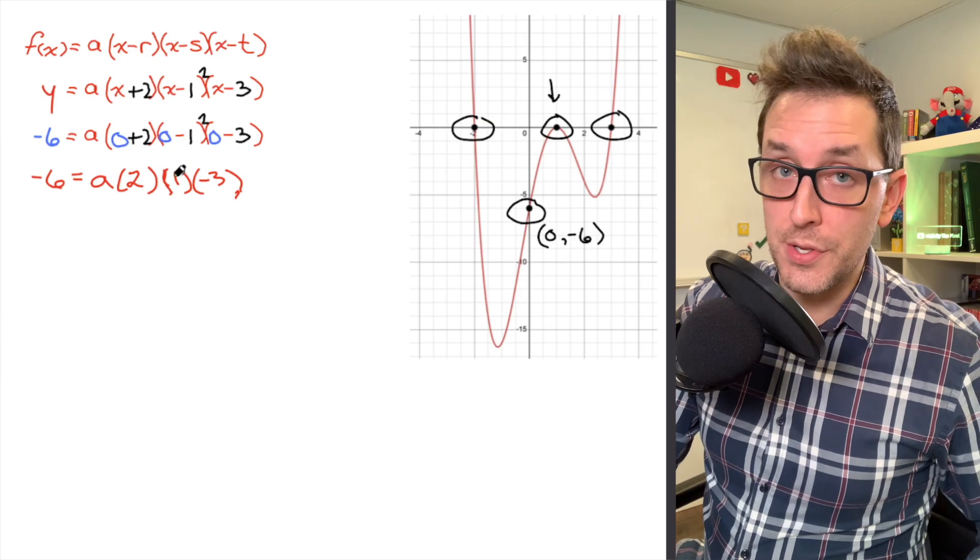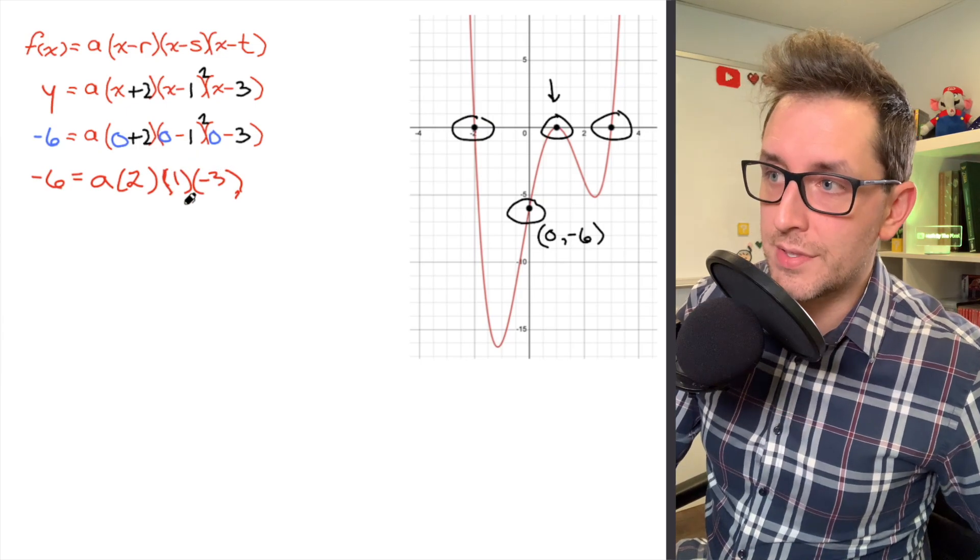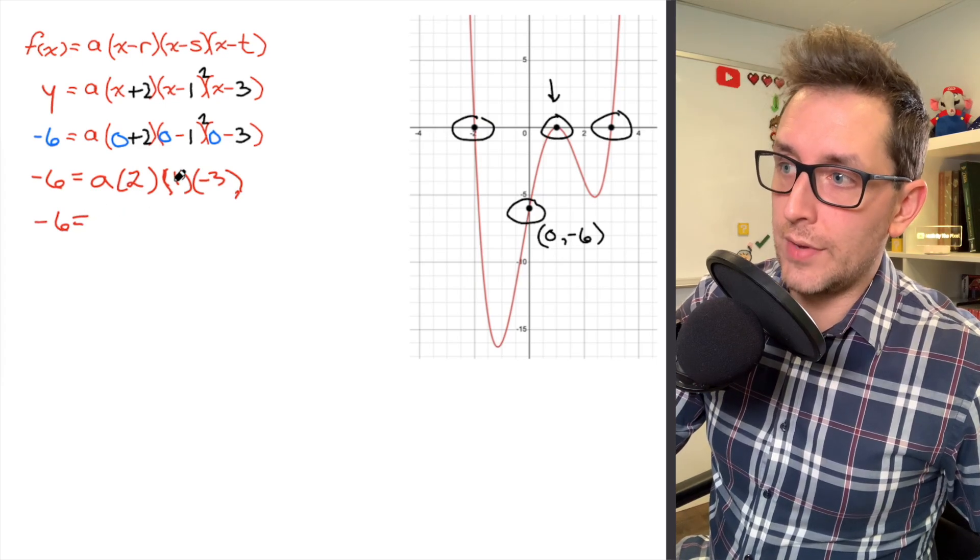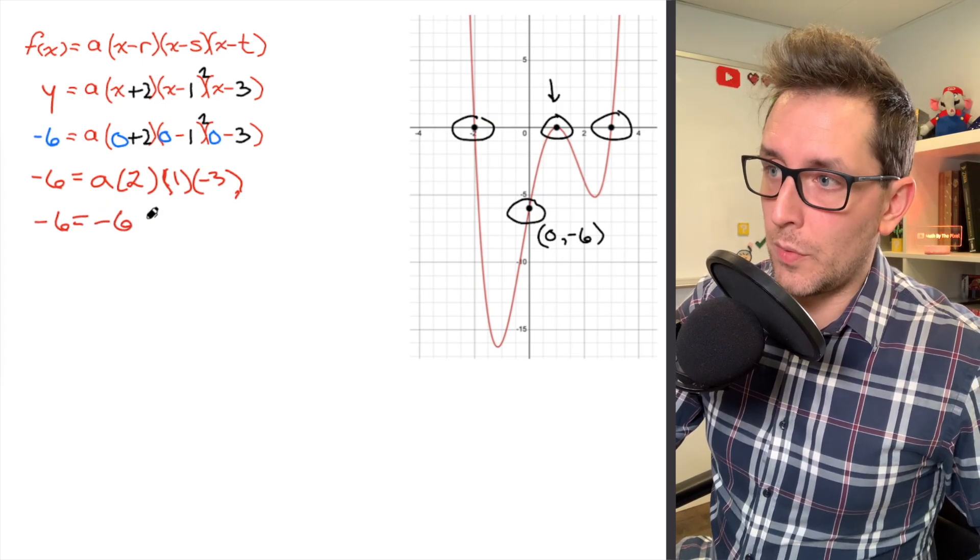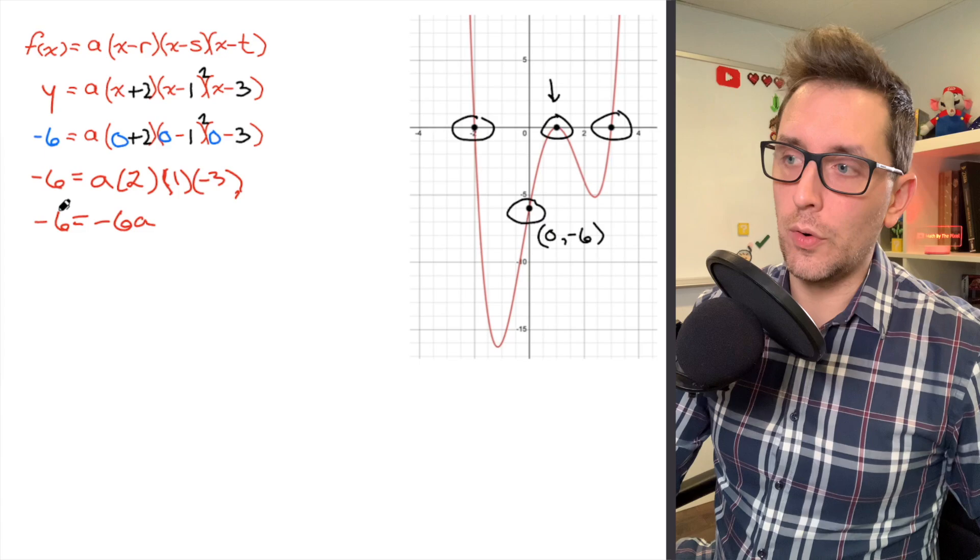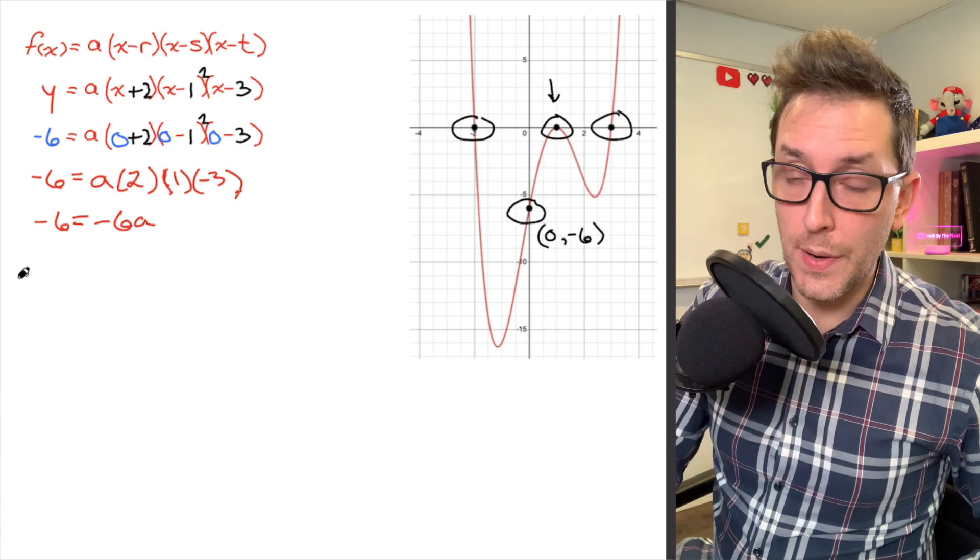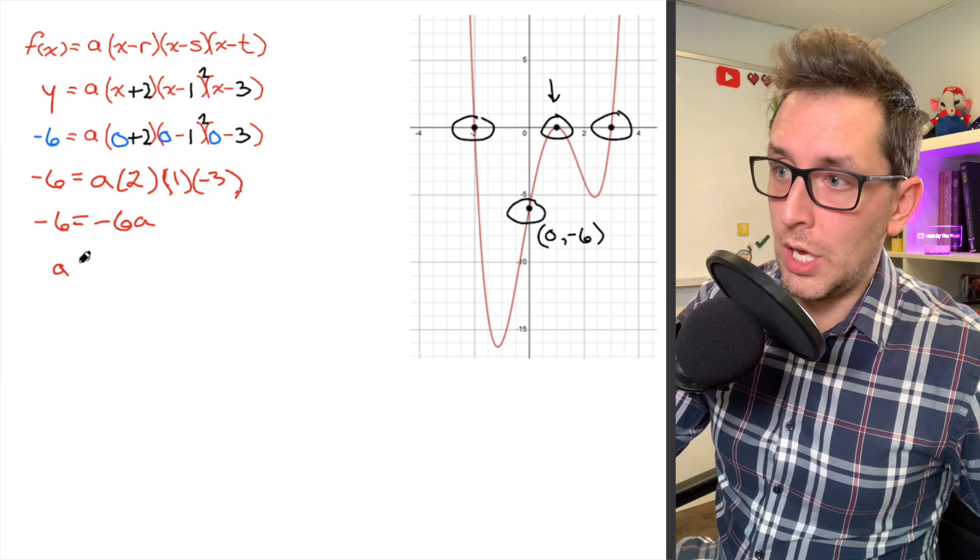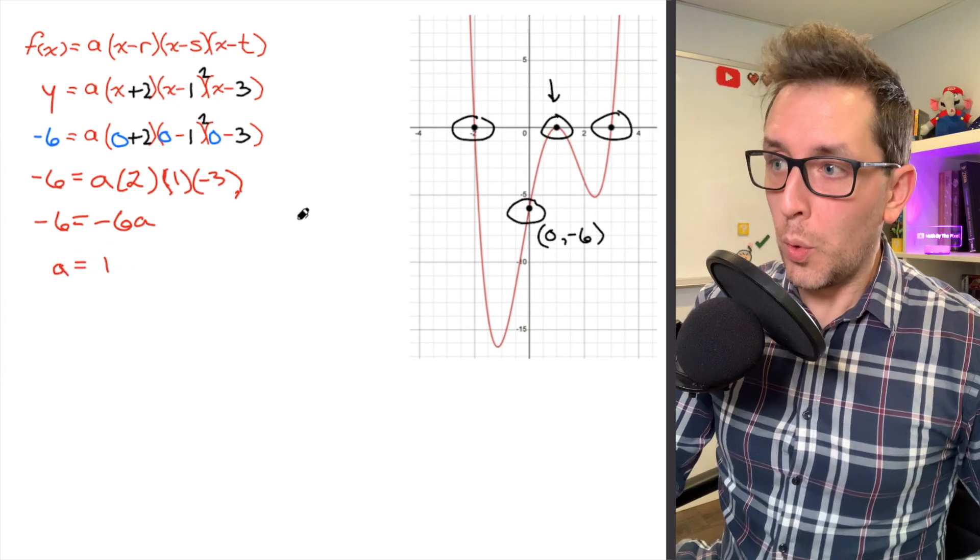So I'm going to multiply these three numbers together. And that's going to help me solve for my parameter of a. So I've got 2 times 1, also known as 2, times negative 3, also known as negative 6. So what I'm really working with here is negative 6 equals, and I've got negative 6 times a. So I'm going to write that negative 6 times a. So very simple one-step algebraic equation here, dividing both sides by negative 6 is going to produce an a value of 1.